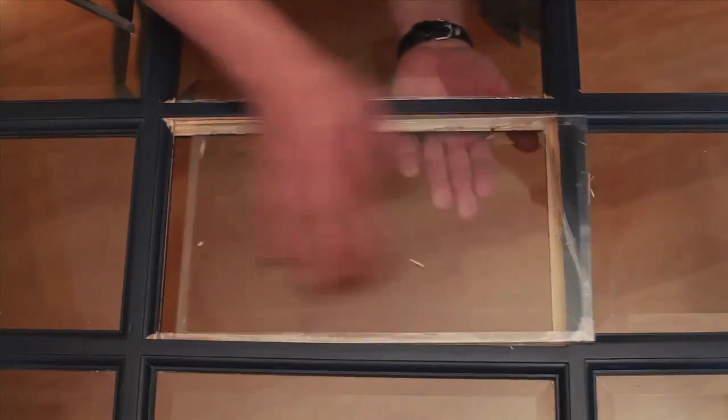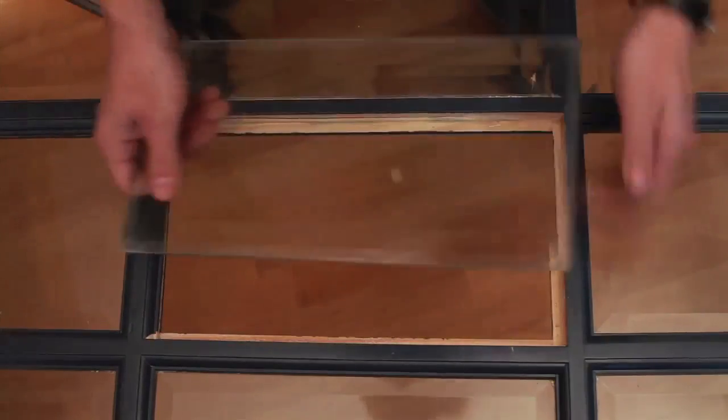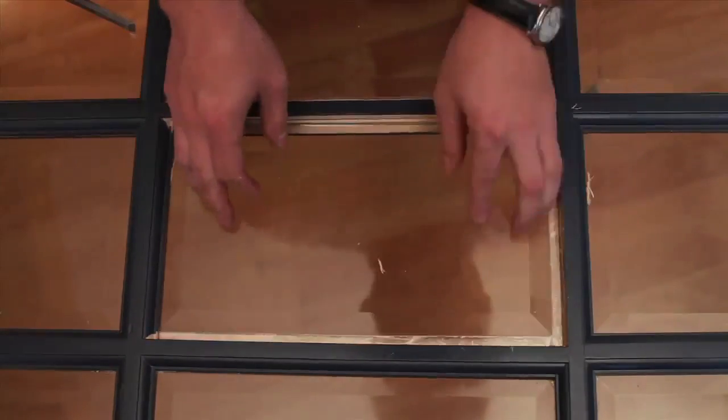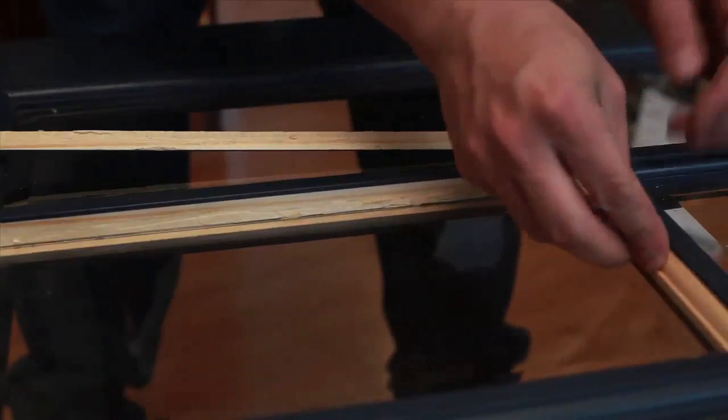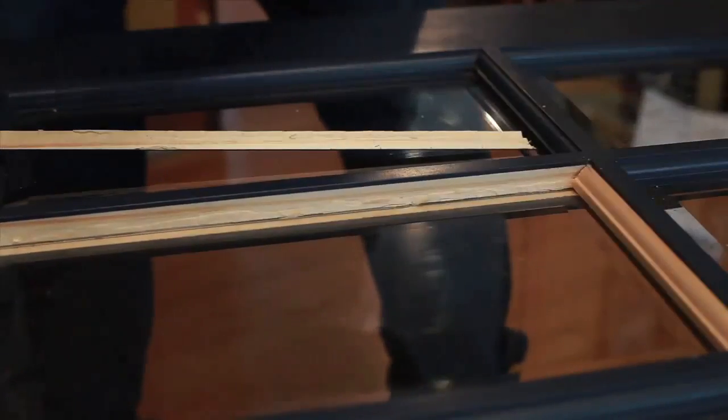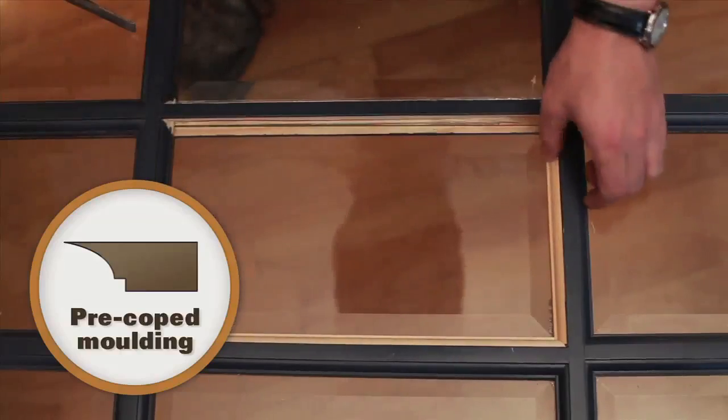Carefully remove the glass and insert new glass. To begin replacing the moldings, start by cutting the shortest section at a 90 degree angle on both sides, then insert the pre-cooked molding overlapping the shortest piece.